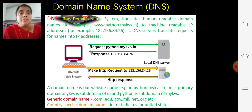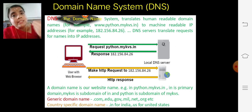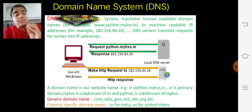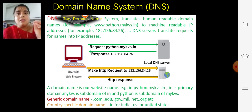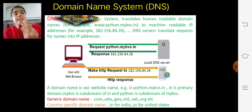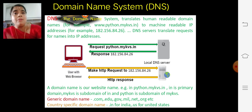Then the server fetches all the details from the IP address, processes the HTML document, and delivers the web page to the web browser. So the actual processing happens on the server. The browser is only giving the request, whereas the server is responsible for finding the IP address, fetching the details, processing the HTML document, and then responding with a web page to the web browser.